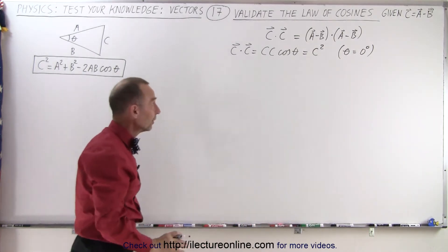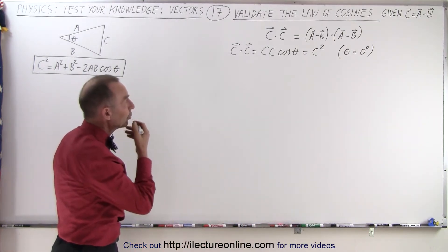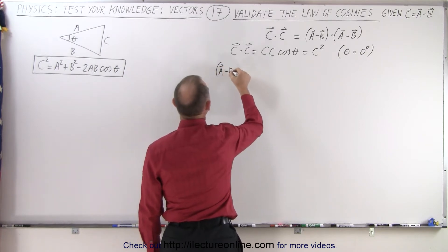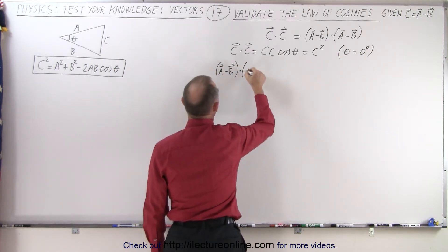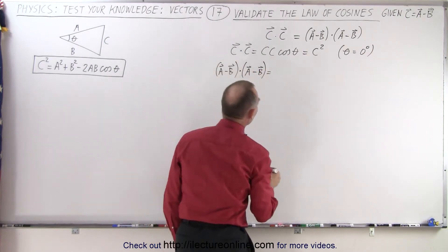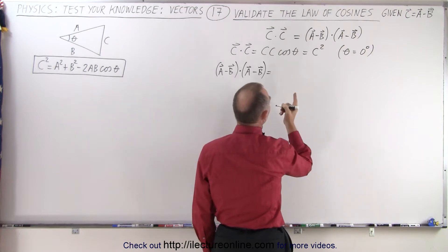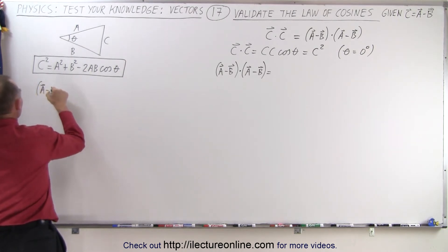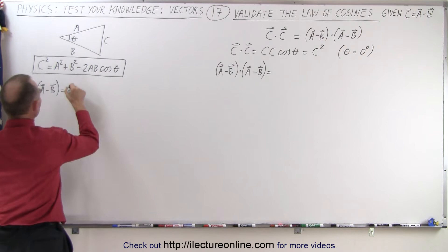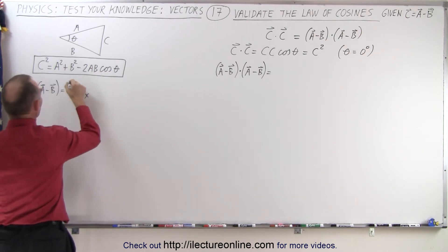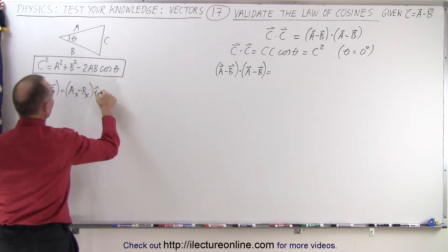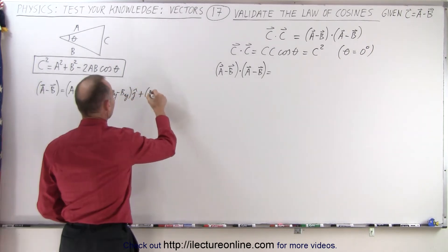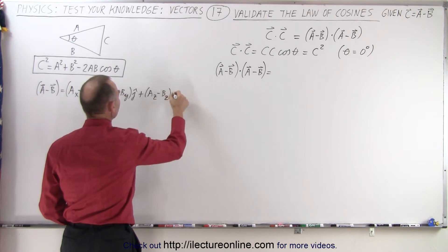The cosine of zero is one. Now we're going to do the dot product of A minus B. So the dot product of A minus B dotted with A minus B — let's write that out. A minus B is equal to A sub X minus B sub X in the I direction, plus A sub Y minus B sub Y in the J direction, plus A sub Z minus B sub Z in the K direction.